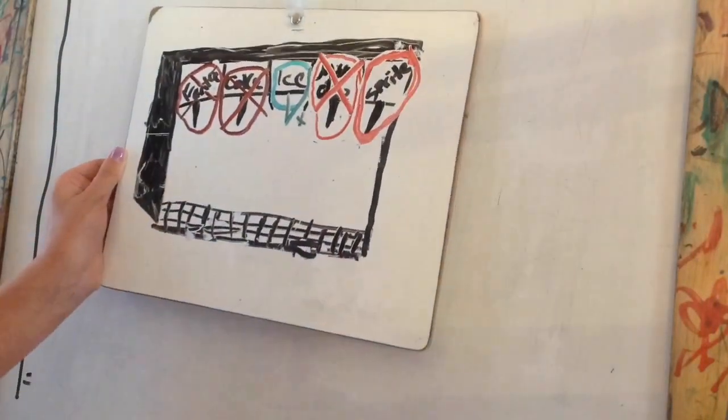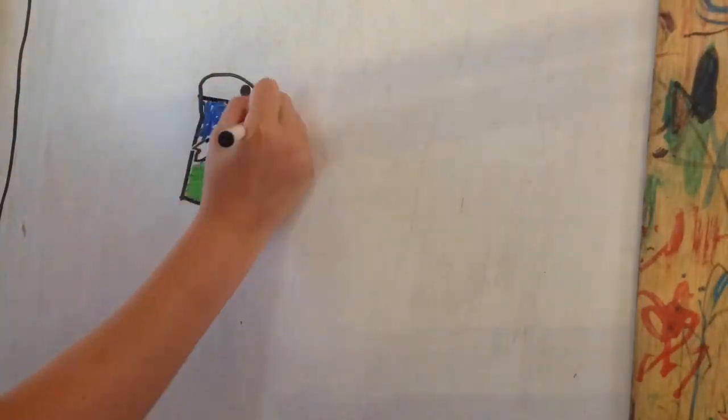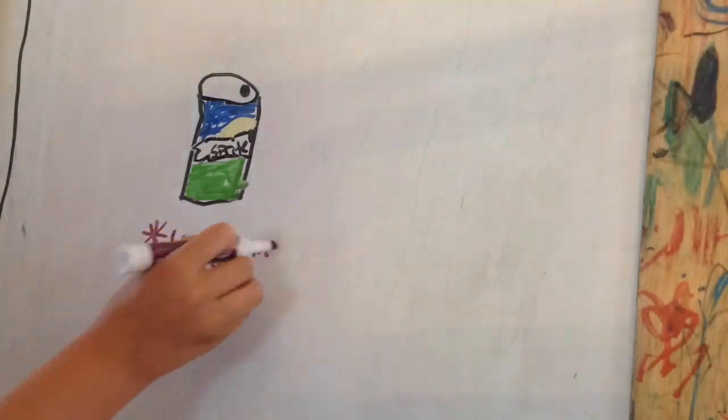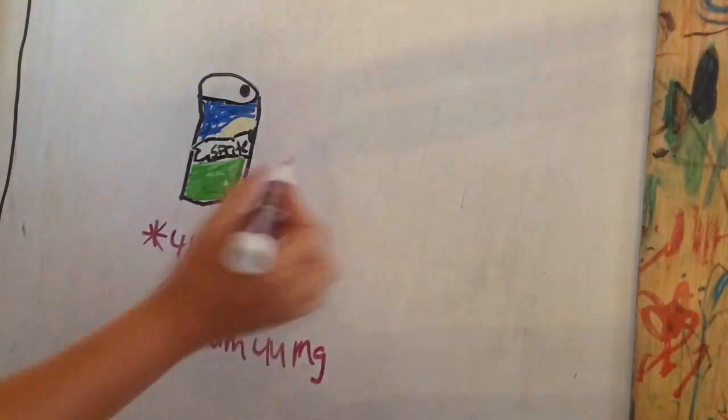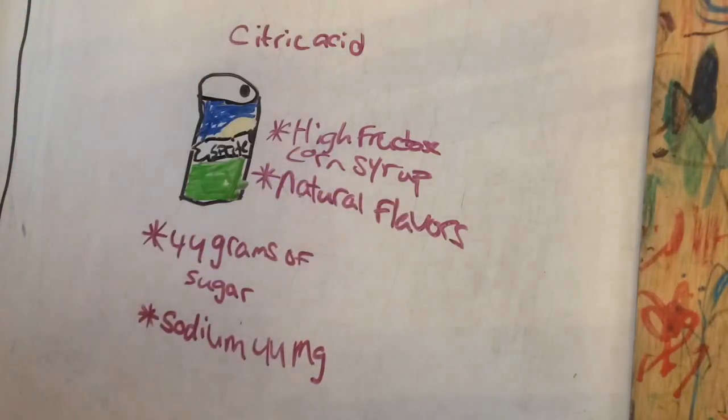Last but not least, we have Sprite. This drink may look like carbonated water, but you're wrong. This drink consists of 43 grams of sugar and 44 milligrams of sodium. It also has high fructose corn syrup and natural flavors. And to finish it off, it has citric acid and 192 calories.